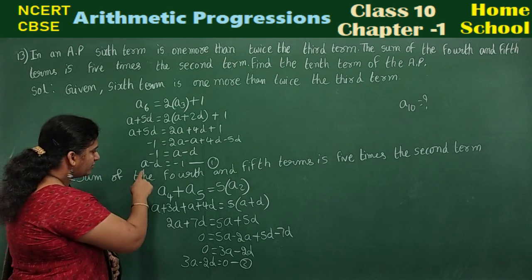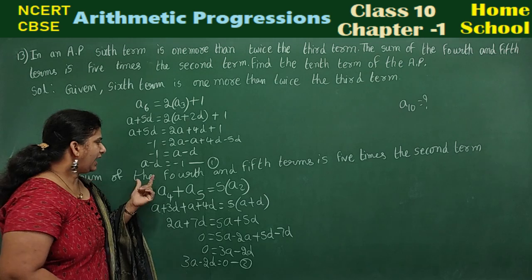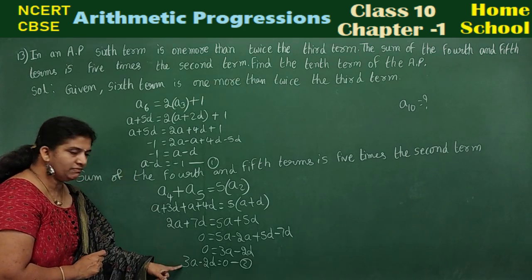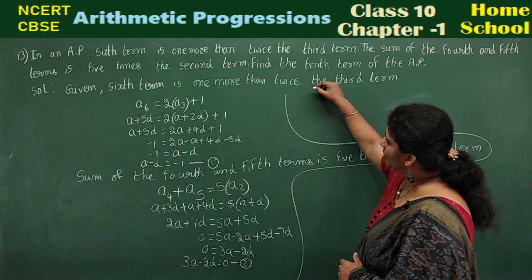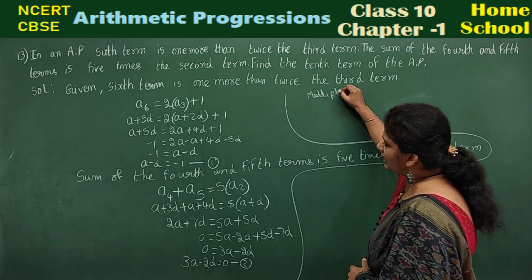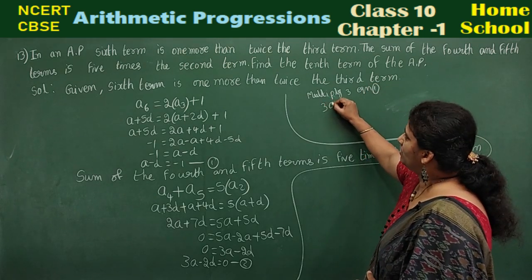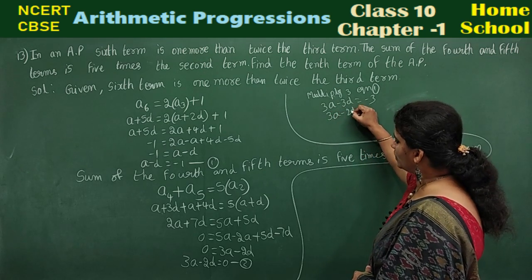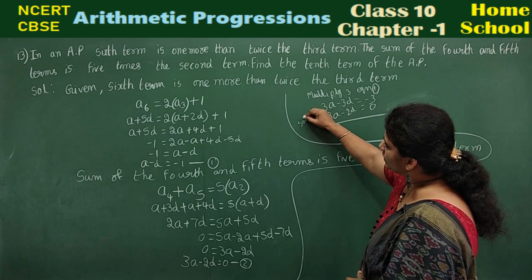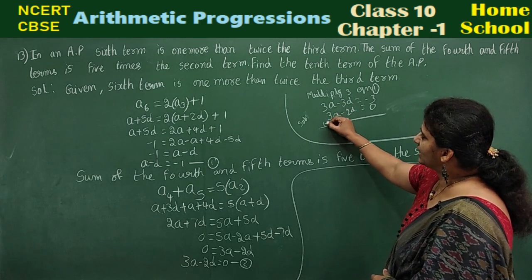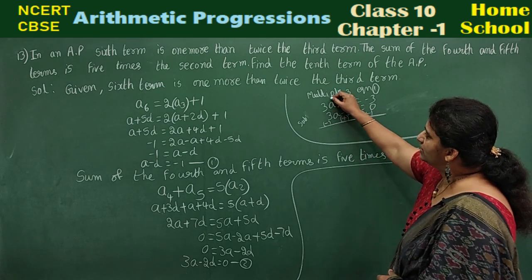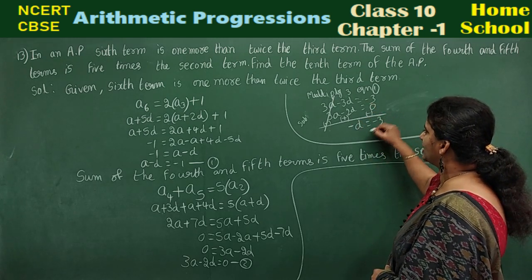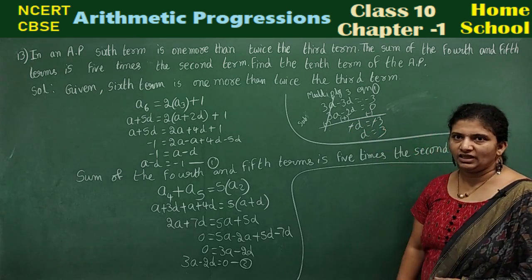Observe these two equations carefully. We have A and 3A for the A terms, D and 2D for the D terms — you can eliminate either. I'll try to eliminate A. To make the A coefficients equal, multiply equation 1 by 3: that gives 3A minus 3D equals minus 3. The second equation stays as 3A minus 2D equals 0. Subtracting, the 3A terms cancel. Minus 3D plus 2D gives minus D, and minus 3 minus 0 gives minus 3. So D equals 3.